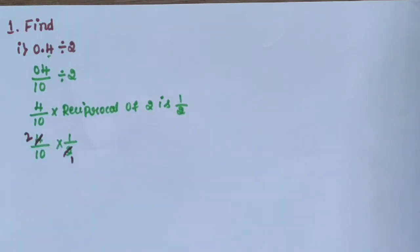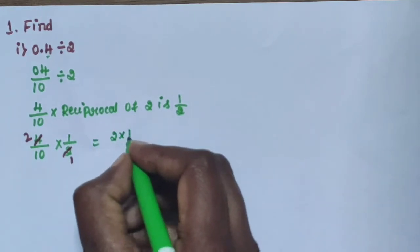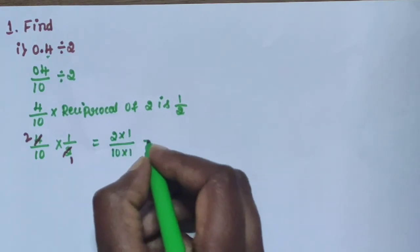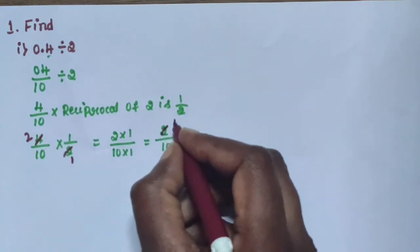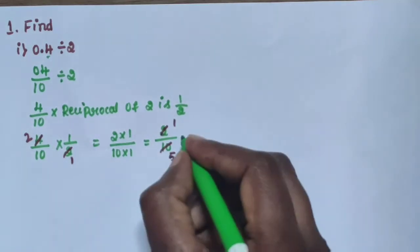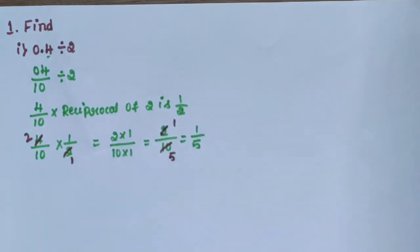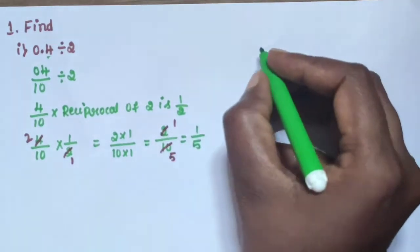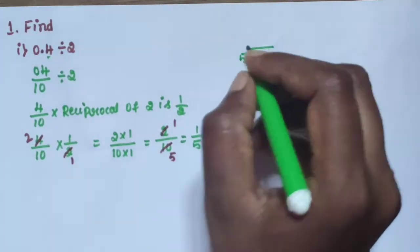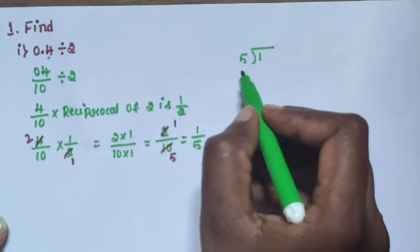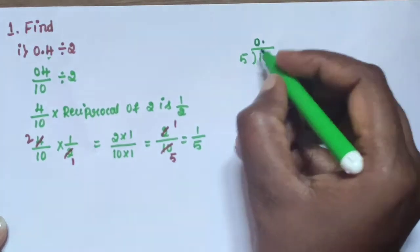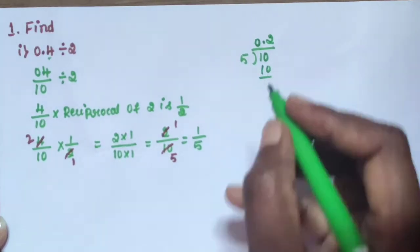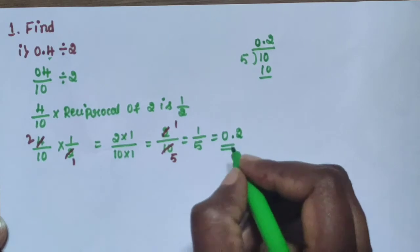Then 4 divided by 10 into 1 by 2. Simplify: 2 ones are 2, 2 fives are 10, giving 1 by 5. Now converting to decimal: 1 divided by 5 — since 1 is smaller than 5, apply 0. point. 0.5 equals 10, and 5 twos are 10. The answer is 0.2.